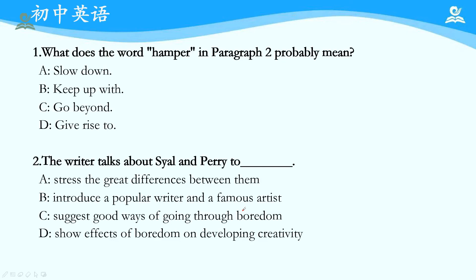第二题：The writer talks about these two writers and artists to do what? 我们分析过结构，这部分属于举例论证，来支撑论点。所以正确答案是：show effects of boredom on developing creativity. 他提到的角度可能不一样，但都是在说有利于develop mind、develop imagination，so as to strengthen one's creativity。